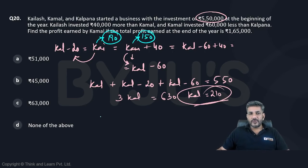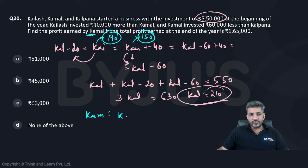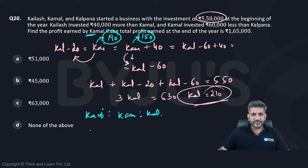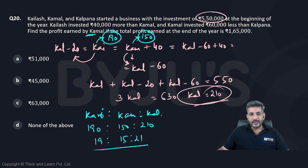At the end of the year we have a profit of 165,000 and we have to find out the profit earned by Kamal. Their investments are in what ratio? Kailash to Kamal to Kalpana — all names starting with K makes it difficult to figure out — it is 190 to 150 to 210, or 19 to 15 to 21.